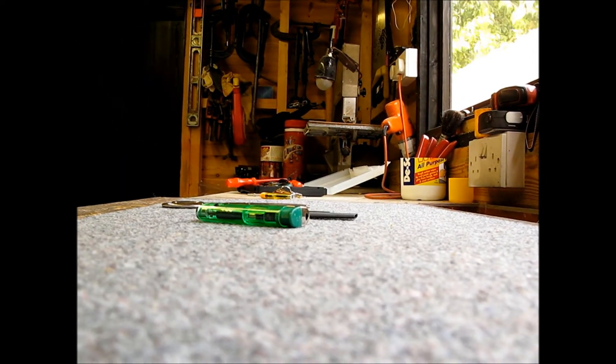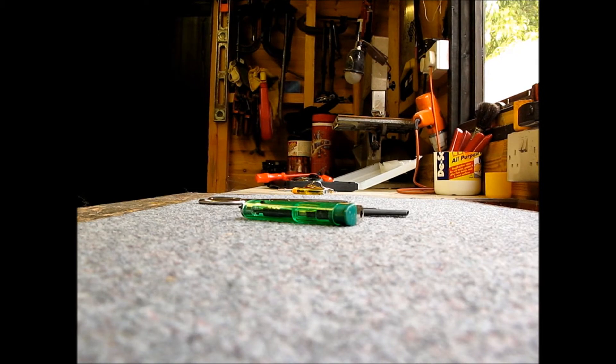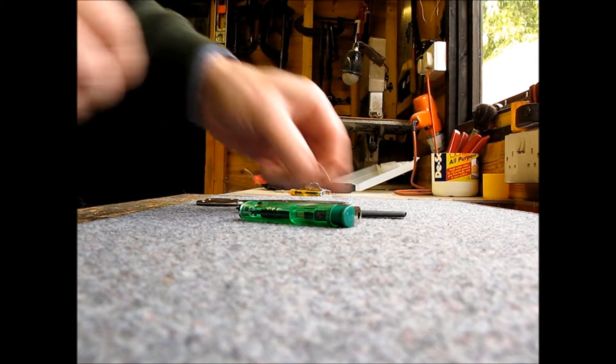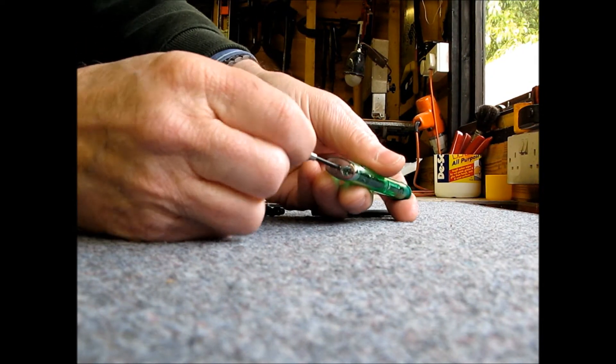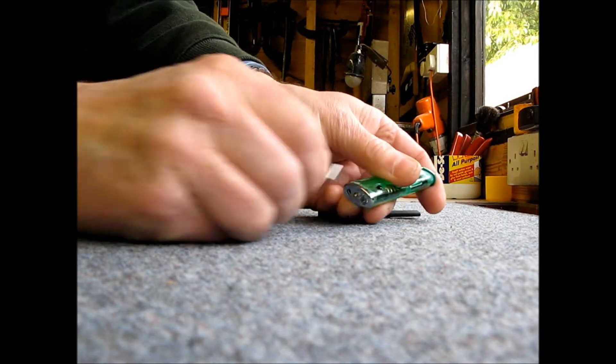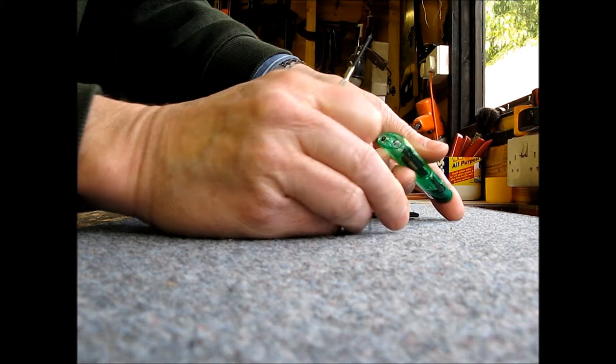This is what you do. Just pop that down there for a minute, move that out of the way. All you do is get your little screwdriver, and you see a little screw at the bottom there, just undo that screw, pull it out.